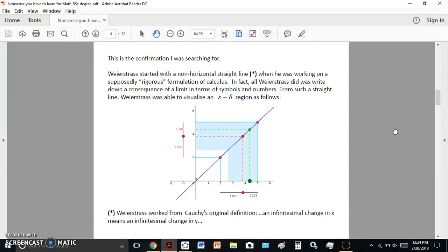He failed because all he did was he wrote down a consequence of the limit in terms of symbols and numbers. And this is how he got his ideas. He looked at a straight line and mapped and saw that there was a mapping in this region here, this blue shaded region. And so everything that he wrote down followed from this.